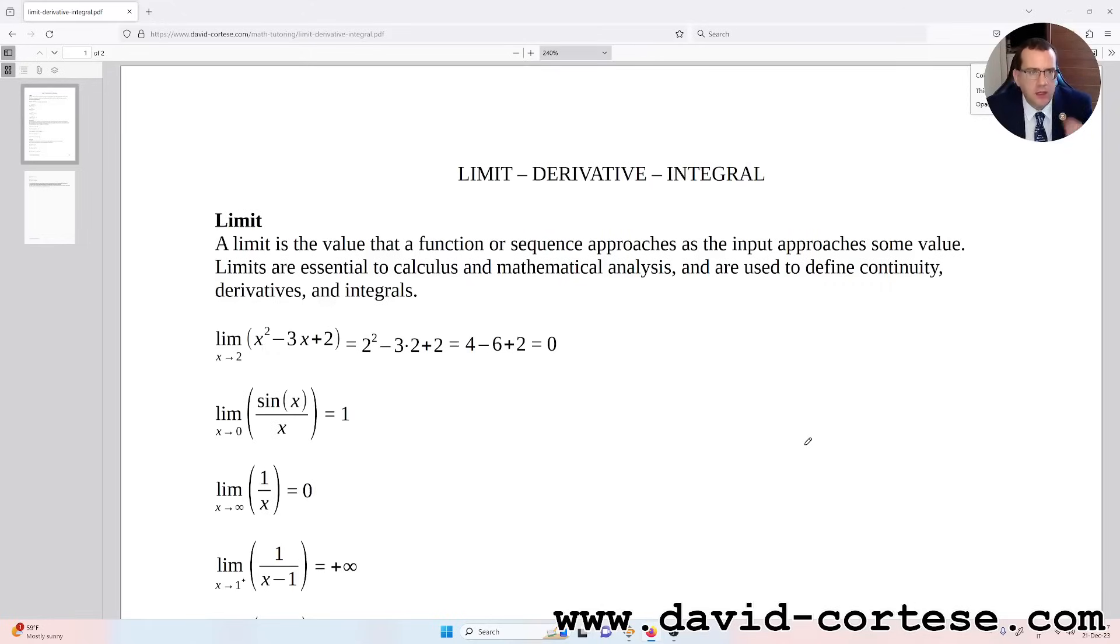Limit as x approaches 2 of x squared minus 3x plus 2 is equal to 2 squared minus 3 times 2 plus 2, that is 4 minus 6 plus 2, that is 0.